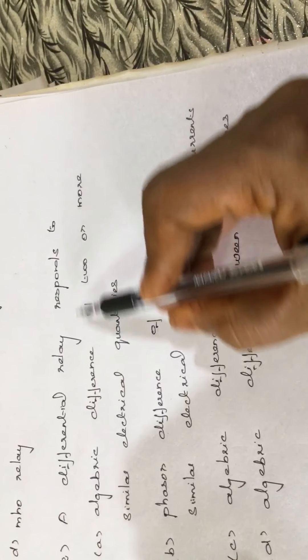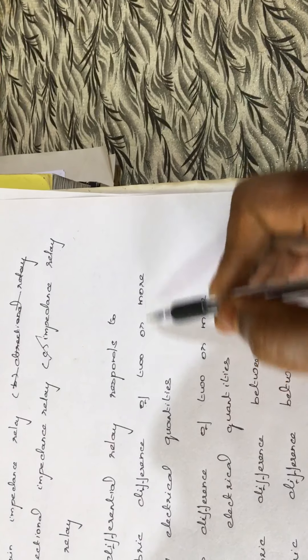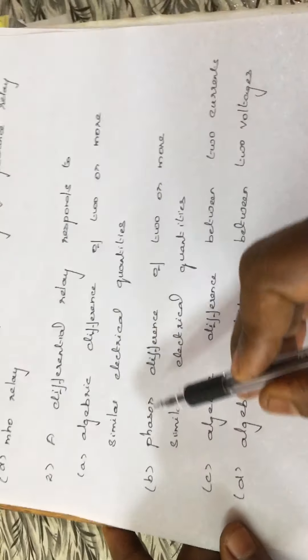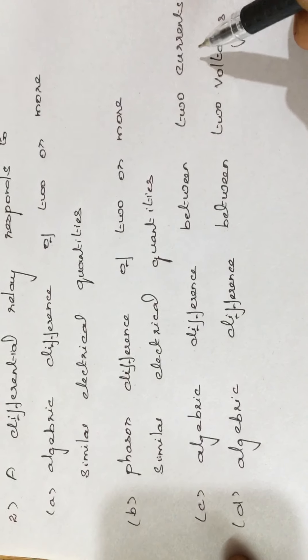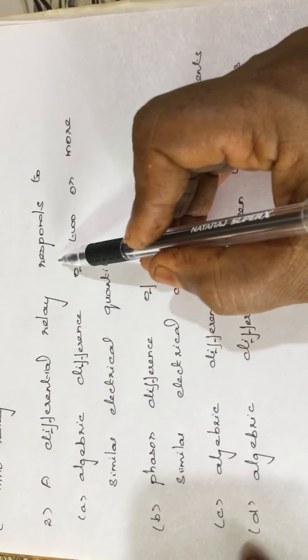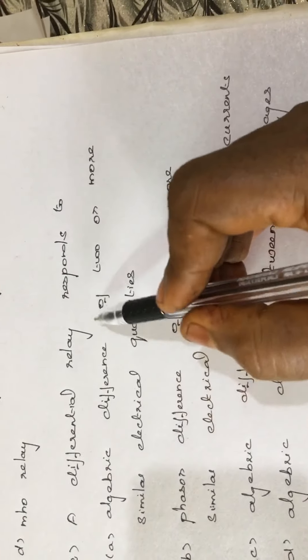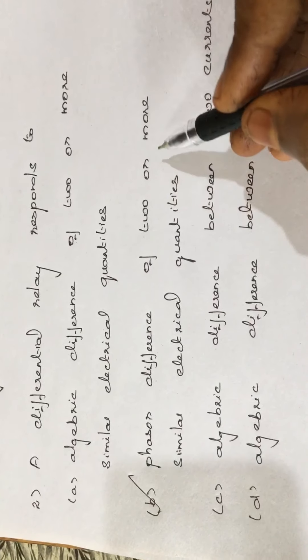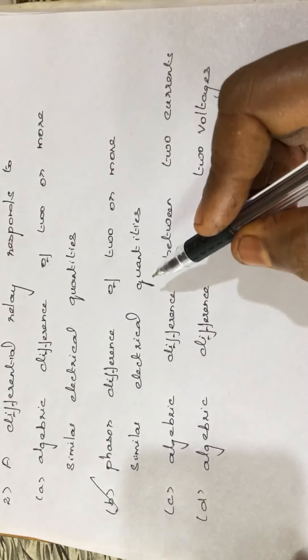We are now going to see about the differential relay. A differential relay responds to: Option A: algebraic difference of 2 or more similar electrical quantities, Option B: phasor difference of 2 or more similar electrical quantities, Option C: algebraic difference between 2 currents, Option D: algebraic difference between 2 voltages. By the name itself, we know there is some difference in its characteristics. The differential relay responds to the phasor difference of 2 or more similar electrical quantities. Option B is the answer.